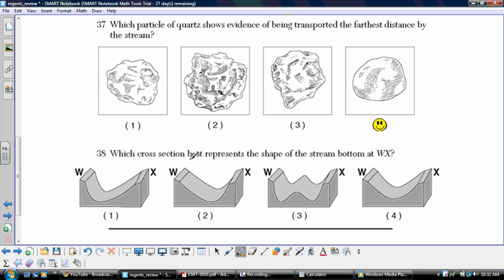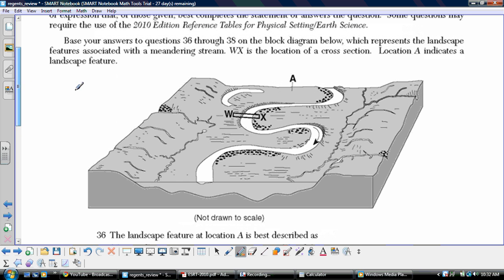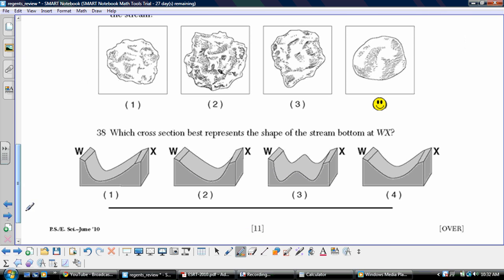And 38, cross-section that best represents the shape of the stream bottom at WX. So we're going to see exactly where we are. WX is coming around this curve here. We can see the texture that they've put in here to represent the erosion that's going to be taking place, the little embankment that we have here, versus over here at W, whereas here at the inside of that curve at X, there's going to be deposition taking place. Okay, so we should see a deeper channel closer to W in our profile, in our cross-section, than we see over at X. And we'll take a look here, and right off the bat, we see number one, and we've got a deep channel over by W and a shallow channel by X. Fantastic.